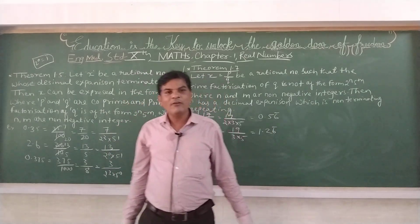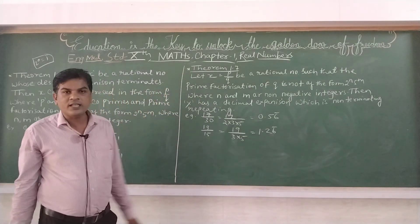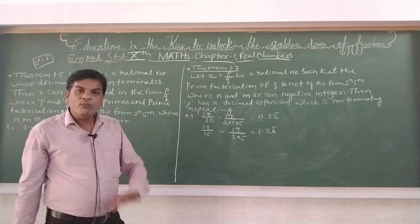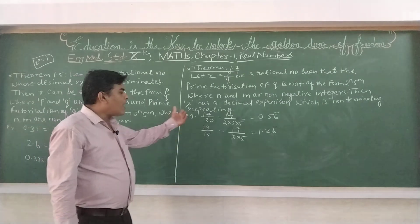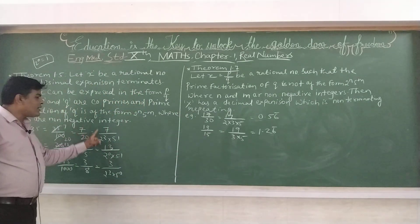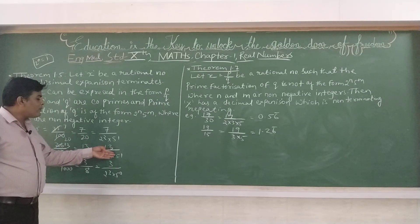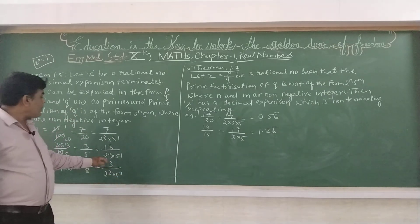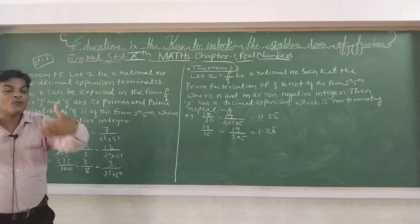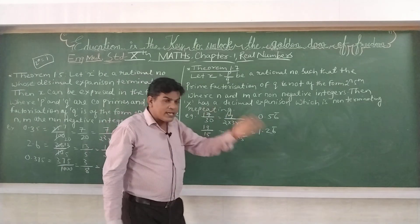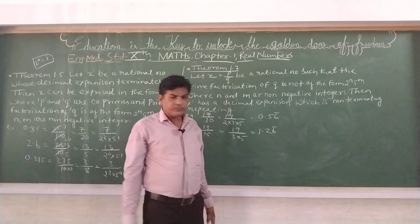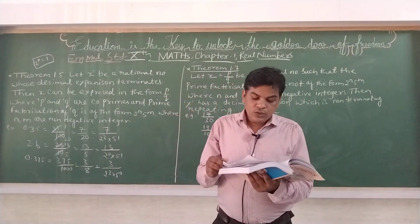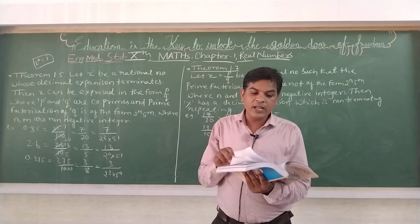Students, I hope you understand how to find the terminating decimal number and non-terminating decimal number without actual division. Bina division kiye aap kaise find karoge: denominator ki prime factorization karo. Agar wo 2^n aur 5^m form mein aata hai to terminating decimal. Lekin 2 aur 5 ke alawa koi aur number — jaise 3, 7, 9 — aa jata hai to wo non-terminating decimal hoga. Do exercise 1.4, and in the next video we will start the next chapter.